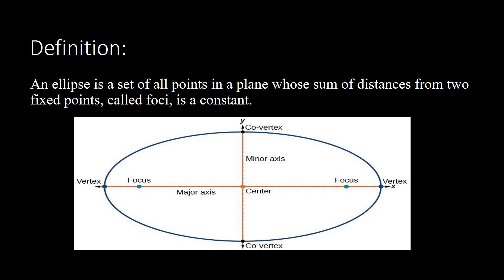Welcome to another Math Day with teacher Jenny. This time we are going to discuss ellipse as part of the conic section. An ellipse is a set of all points in a plane whose sum of distances from two fixed points, called foci, is a constant.